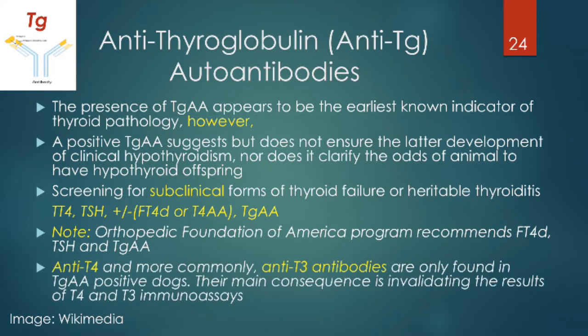Antibodies against T4, and more commonly T3, can be found in some thyroglobulin-positive dogs. This is because these antibodies target certain epitopes on this large protein with T3 or T4 hanging off of it. The main clinical significance of these antibodies is that they invalidate the measurement of total T4, free T4, and total T3. If you use a dialysis method, it doesn't invalidate the free T4 measurement. But if it's a non-dialysis procedure of any sort, you should be suspect about the results.